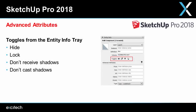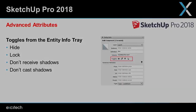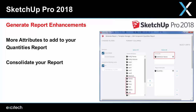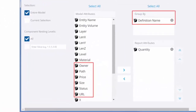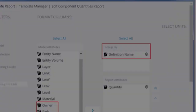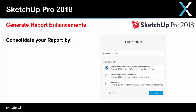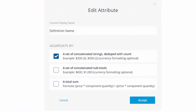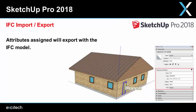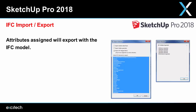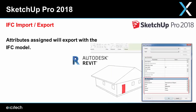They've also included a few toggles to better control these components. Next up, generate report enhancements — you can add more attributes to your quantities report and consolidate your report using the group by function. With the new IFC export improvements, you can now export those advanced attributes you've added to your components, which will help with a BIM workflow.